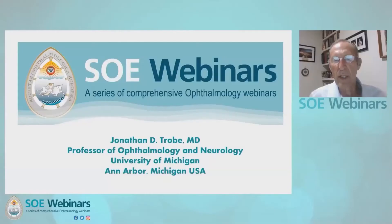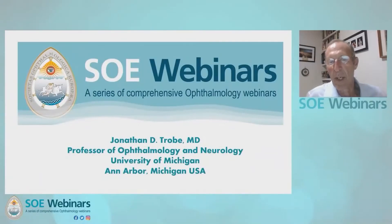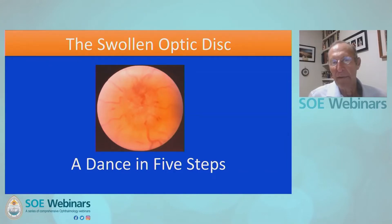Good morning, everyone. This is Jonathan Trobe, speaking from Ann Arbor, Michigan, in the Midwestern United States. My topic today is the swollen optic disc. I have formulated this as a dance in five steps, which means you will have five steps to approach the formulation of the swollen optic disc.